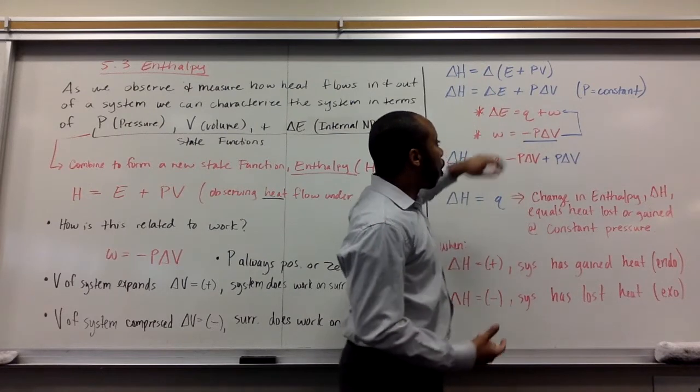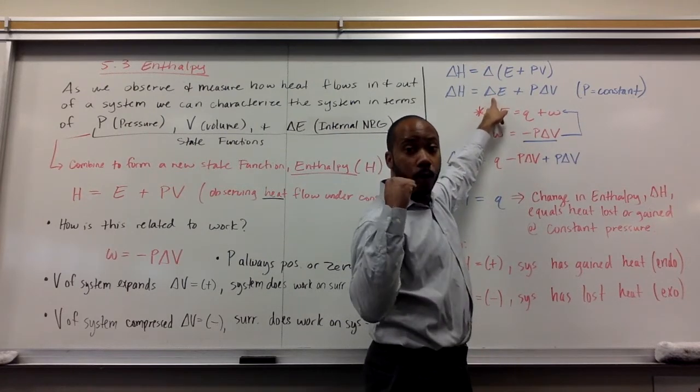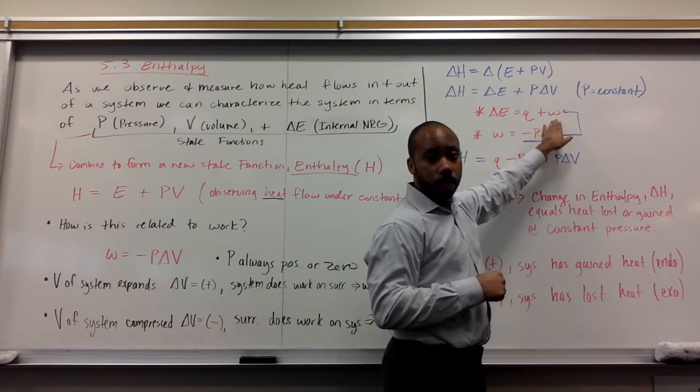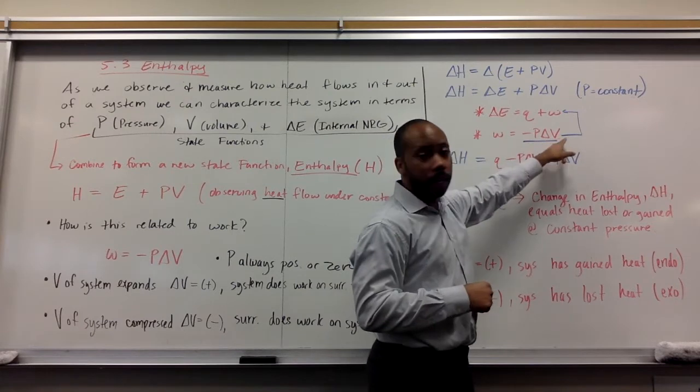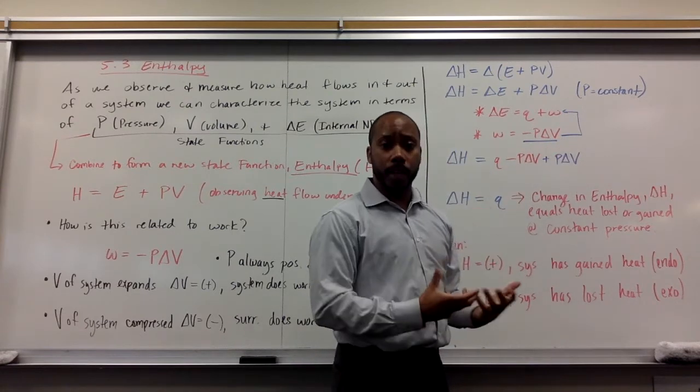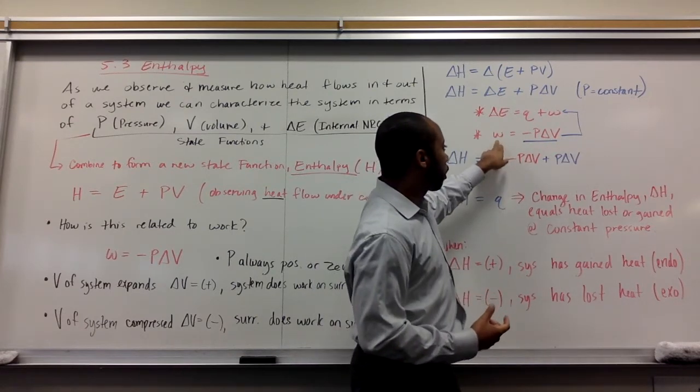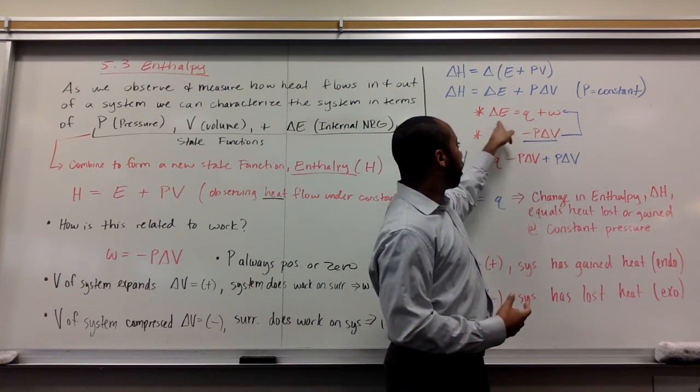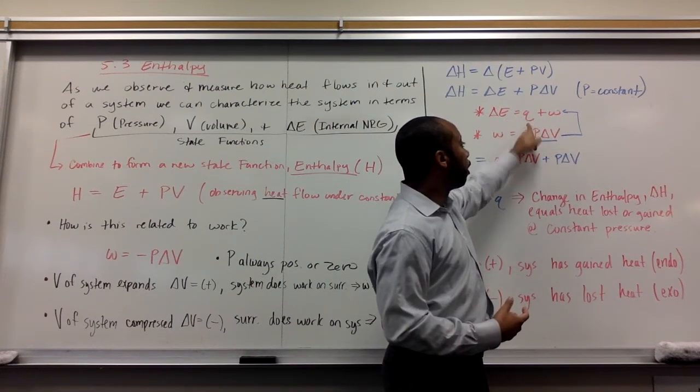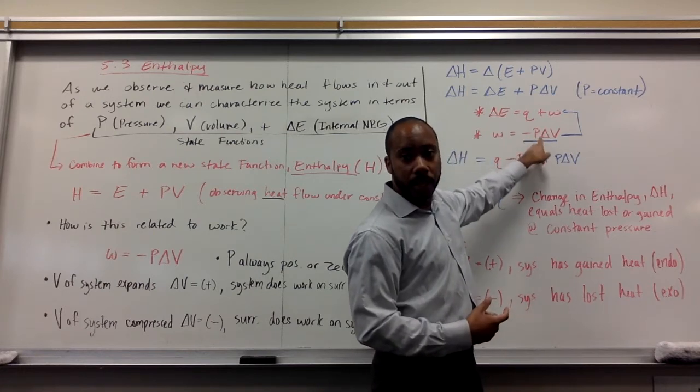Now we know that delta e from before equals q plus w. We know that work from before equals negative p delta v. So if I do some substitution here, I substitute work in for this work here. I get delta e equals q minus p delta v.